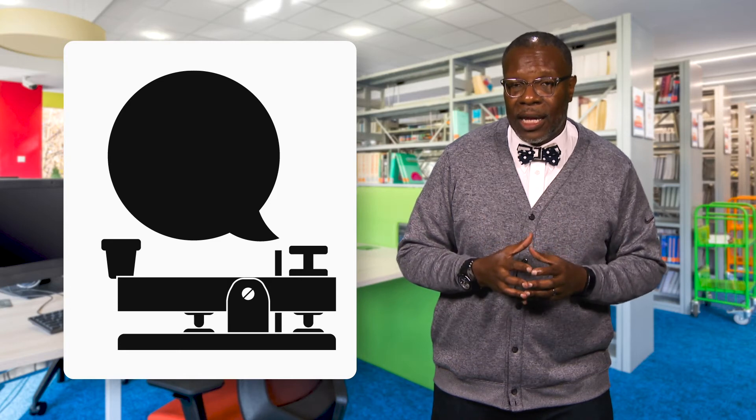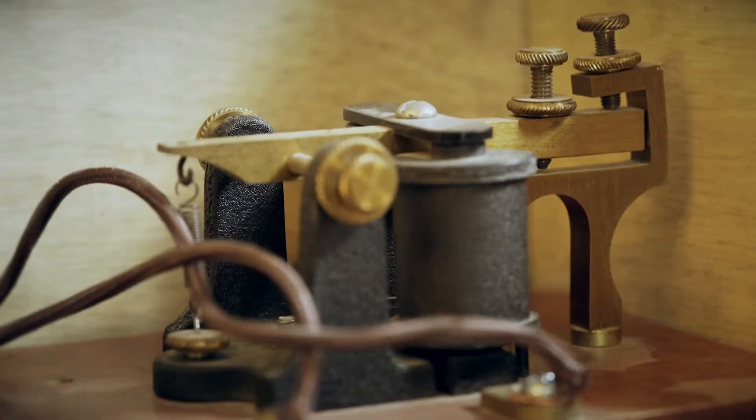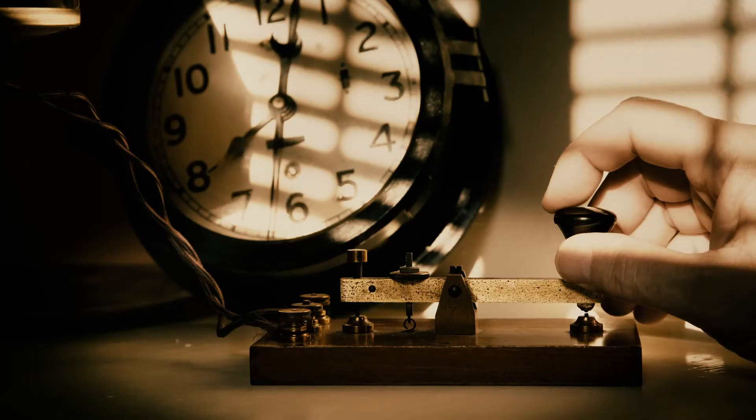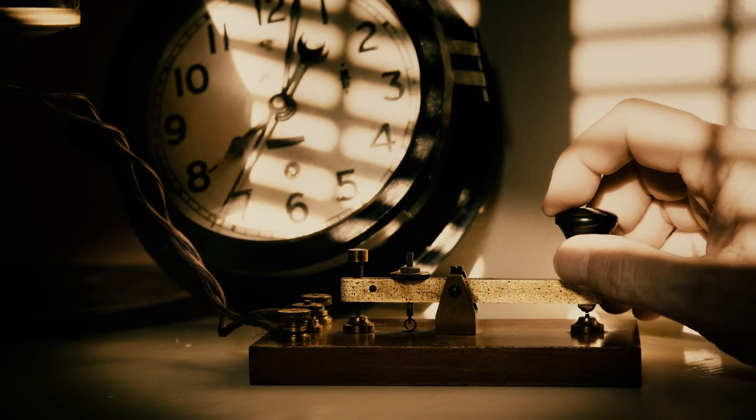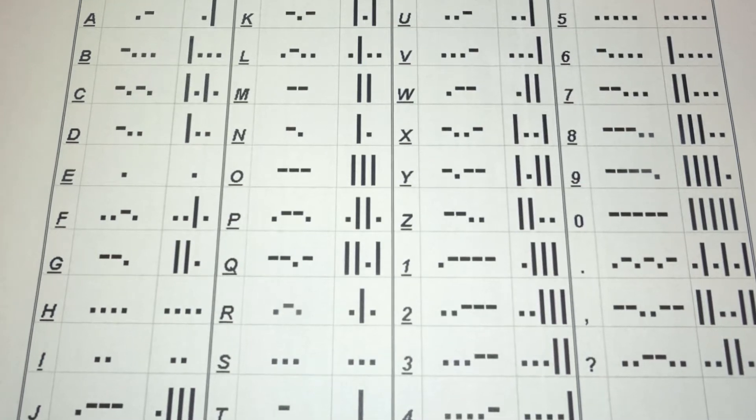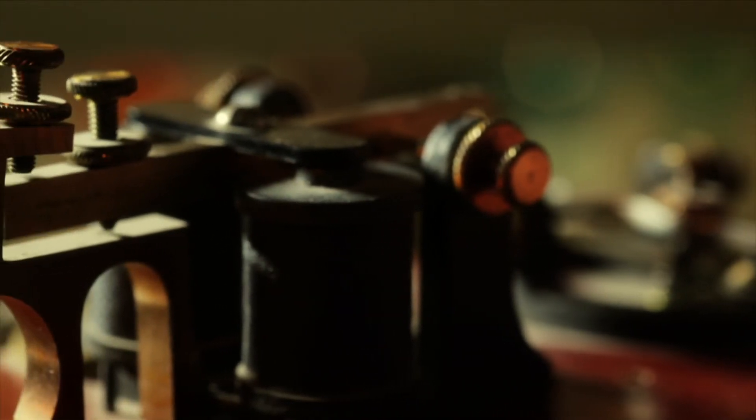Morse code can utilize both light and sound. Using sound, it's a system of dots and dashes — the dots are quick sounds, and the dashes are longer, intermittent sounds. Similarly with lights, you can flash a light on and off quickly for a dot, or leave it on for half a second and then turn it off for a dash. Eventually, those signals were sent through an invention also by Samuel Morse called the telegraph. The person receiving the message at the other end could write down those dashes and dots and decode it.